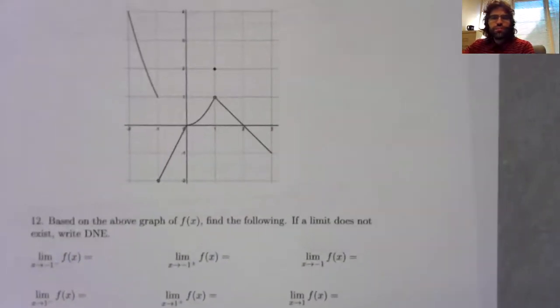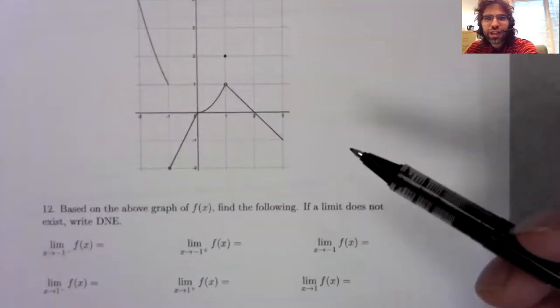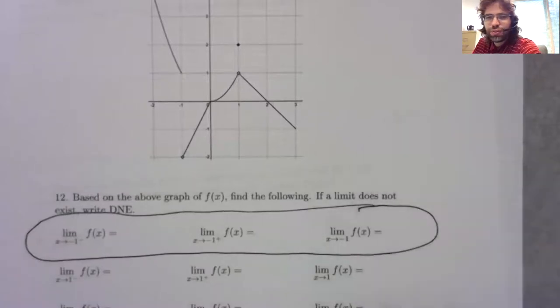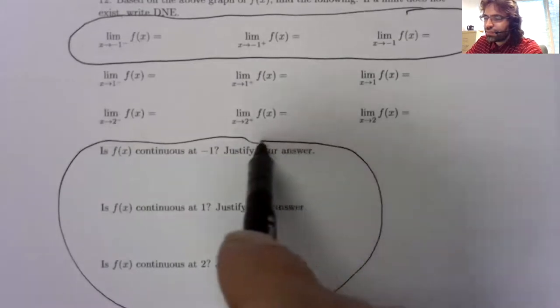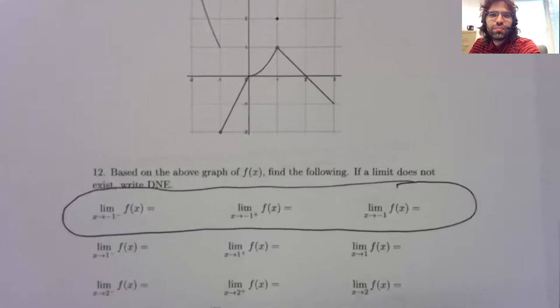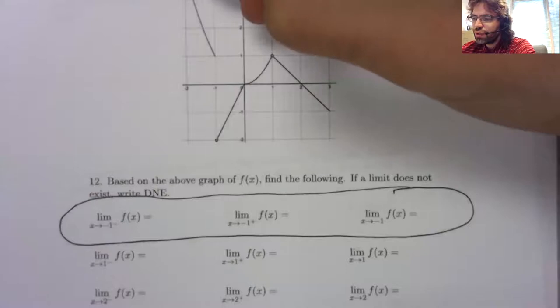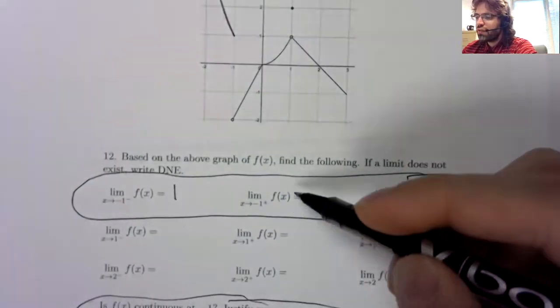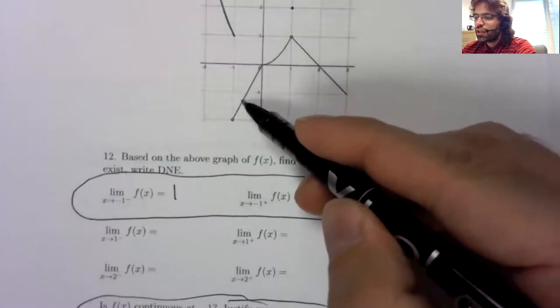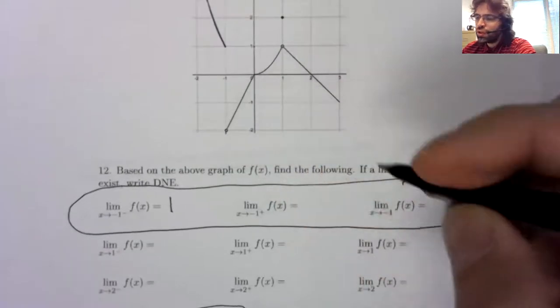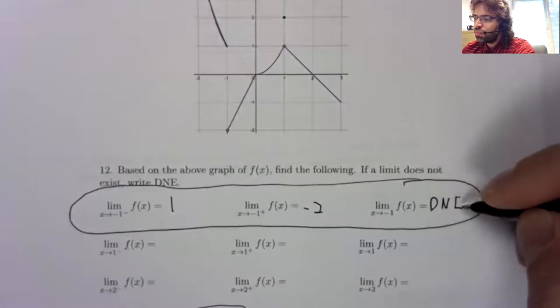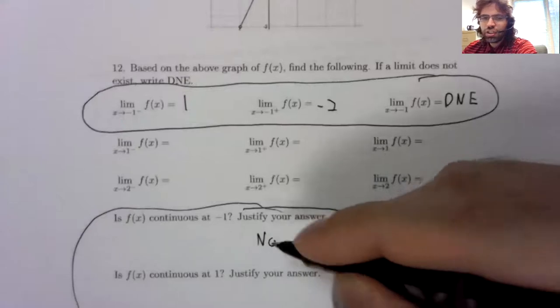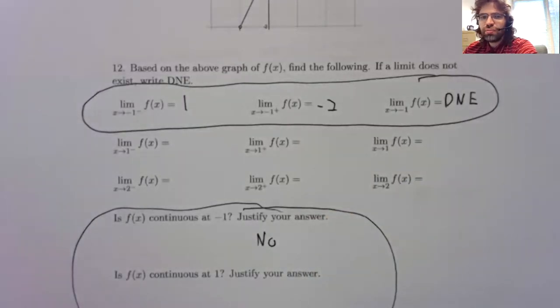Let me see. We did not do, I confess, all of these in class. I think we felt that it was getting a little more tedious. We did those. And we did these. So if we approach negative one from the left, y is coming down to one. If we approach negative one from the right, y is coming down to negative two. The one-sided limits aren't equal. So the two-sided limit doesn't exist. And the two-sided limit doesn't exist. It's not continuous at negative one.